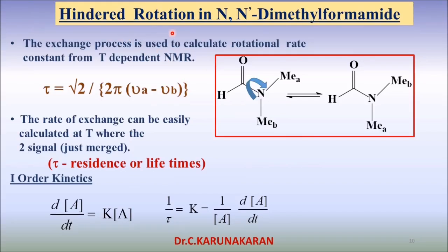How NMR is used to study hindered rotation in N,N-dimethylformamide? In N,N-dimethylformamide, there are two methyl groups. At low temperature, the two protons are chemically distinct. Therefore, they will give two signals, as shown here.